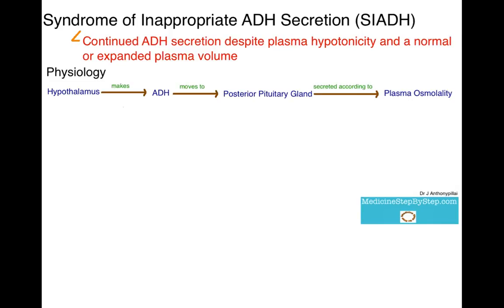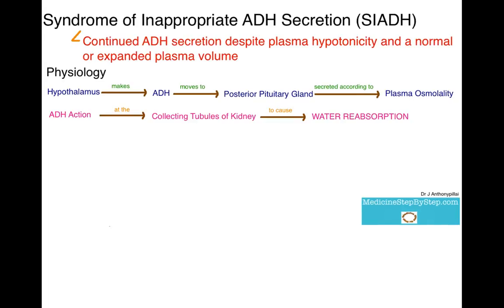At this point you should know the physiology of ADH. The hypothalamus makes ADH and from there it moves to the posterior pituitary gland, where it is then secreted according to the plasma osmolality. One of the main actions of ADH is to act at the collecting tubules of the kidneys to cause water reabsorption.